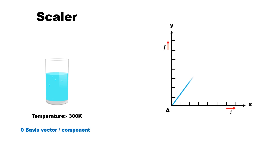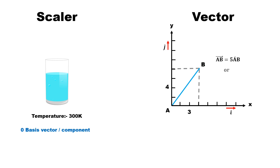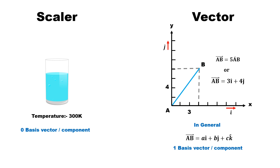Now let's talk about displacement between any two points. To specify the displacement from A to B, we require the magnitude of displacement, which is 5, as well as the direction, which is in the direction of AB. This quantity is called a vector. We can break this vector into its components: vector AB equals 3 i-cap plus 4 j-cap. To specify vector AB, two components and a basis vector corresponding to each component are required — i-cap for component 3 and j-cap for component 4. In general, in 3D space, one basis vector per component is required to specify a vector.